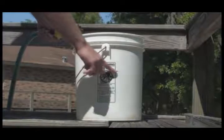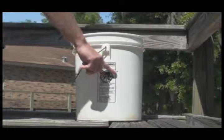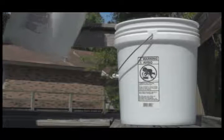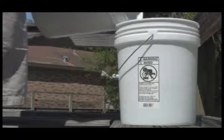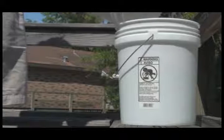When filled to the line, pour the contents of the marked bucket into one of the empty buckets. By repeating these steps for each bucket, you will ensure that each pond has the same volume of water.